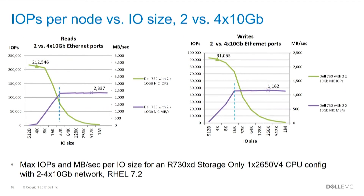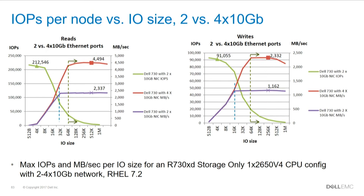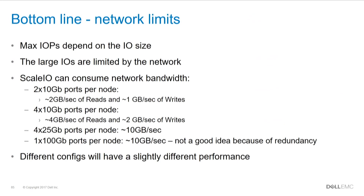If I have four ports, this is an example of a test run with a storage-only config that has one socket and a cheaper CPU — so we're getting 210,000 IOPS instead of 240,000. With four ports, I'm consuming four gigabytes per second of reads and two gigabytes per second of writes. We have other setups with 40GbE or 100GbE where you literally get 10 gigabytes per second per node. We'll consume whatever networking bandwidth you give us.